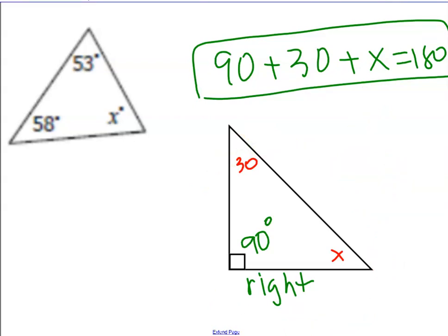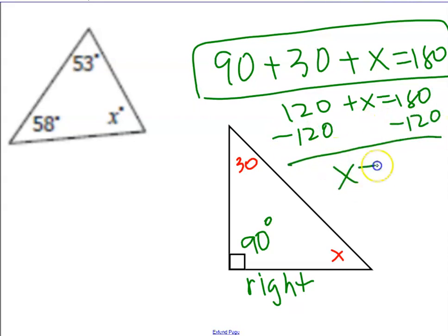How to turn a drawing into an algebra equation. Once you turn it into an algebra equation, you can solve it by combining like terms, using the addition or subtraction property of equality, and figuring out what x is. That's it.